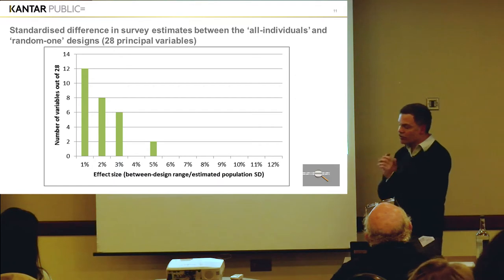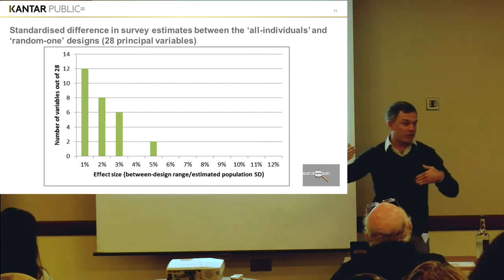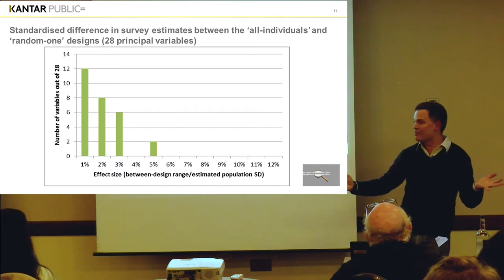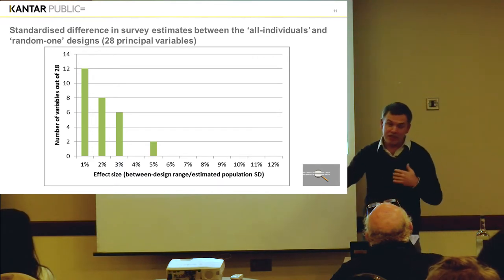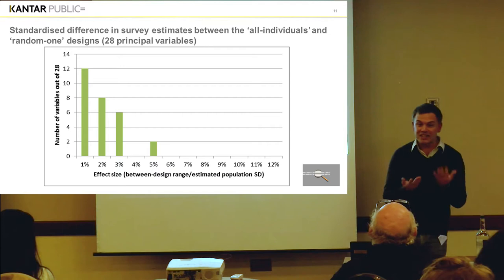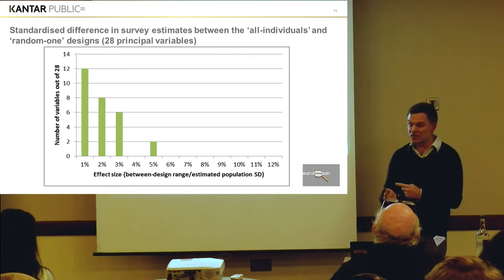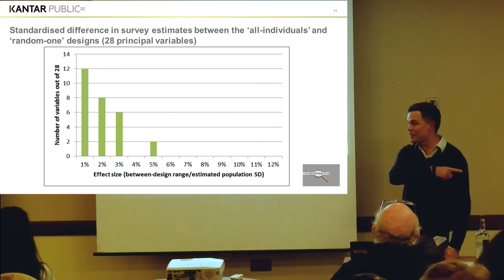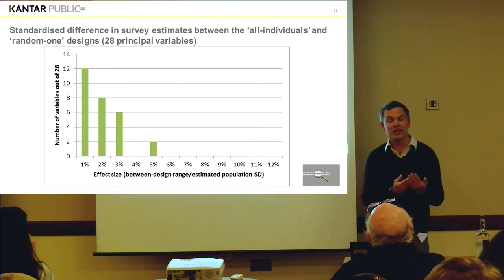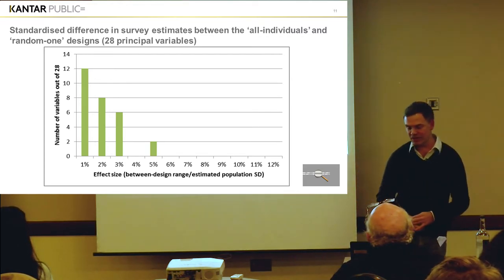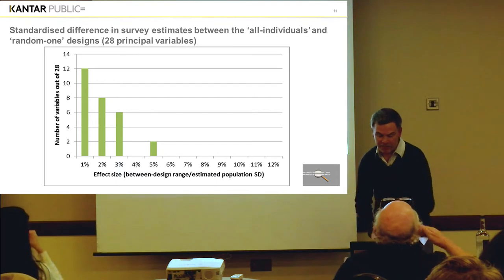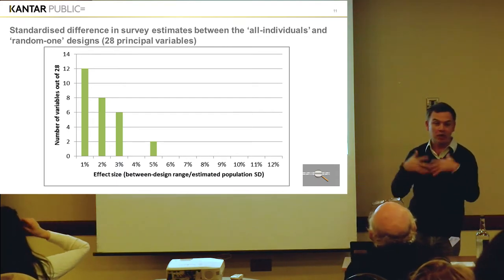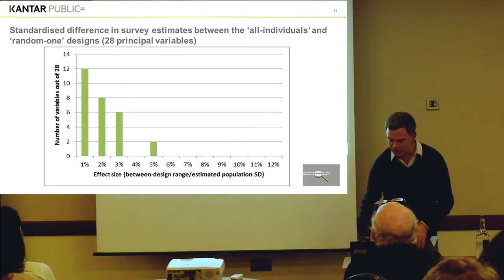It doesn't make a massive amount of difference because you've constrained the set of households who can actually take part in the first place. For all the one-person households, it makes absolutely no difference what sampling method you use. Even in two-person households, it's not a great deal — running a random one or the other, or the first one, is going to have a 50% chance of being the same as a randomly chosen one. So you wouldn't expect masses of difference between them. But the 'all individuals' method appears to be the one that gets closest to the sort of perfect random sampling within one household.